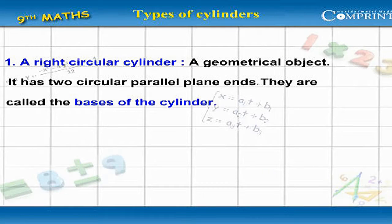A right circular cylinder is a geometrical object with two circular parallel plane ends. They are called the bases of the cylinder.